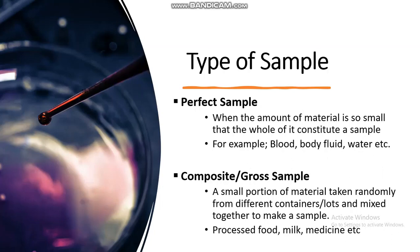There are two types of sample: the perfect sample and the composite sample. A perfect sample is when the amount of material is so small that the whole of it constitutes a sample — for example, blood, body fluid, water, etc.